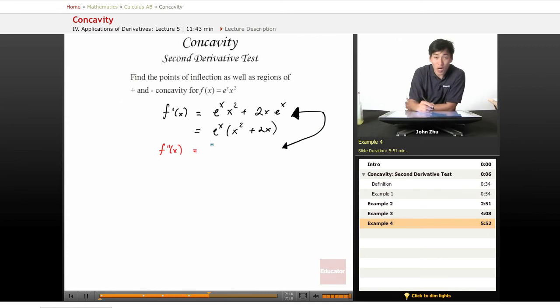Let's use red for our second derivative. Well, product rule again, so we already took the derivative of this, so we know that the derivative of this simply equals this right here, the derivative of this equals this.